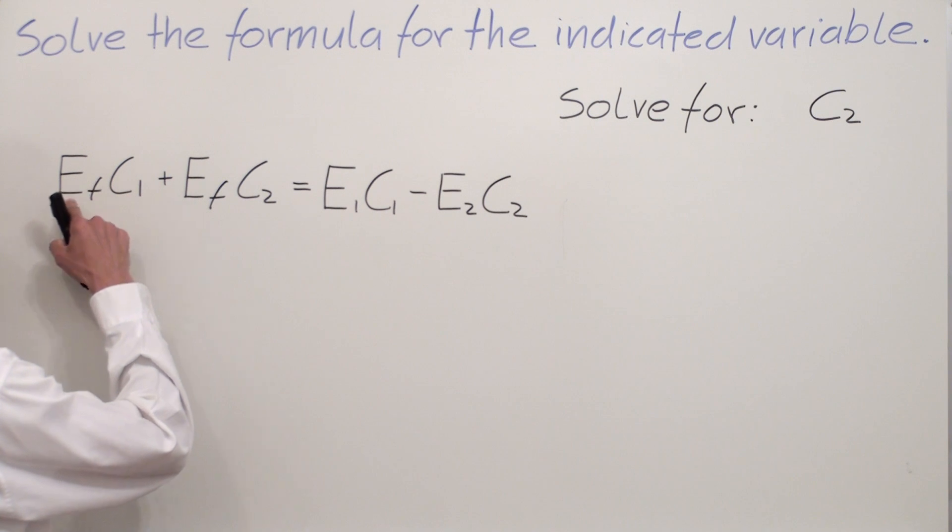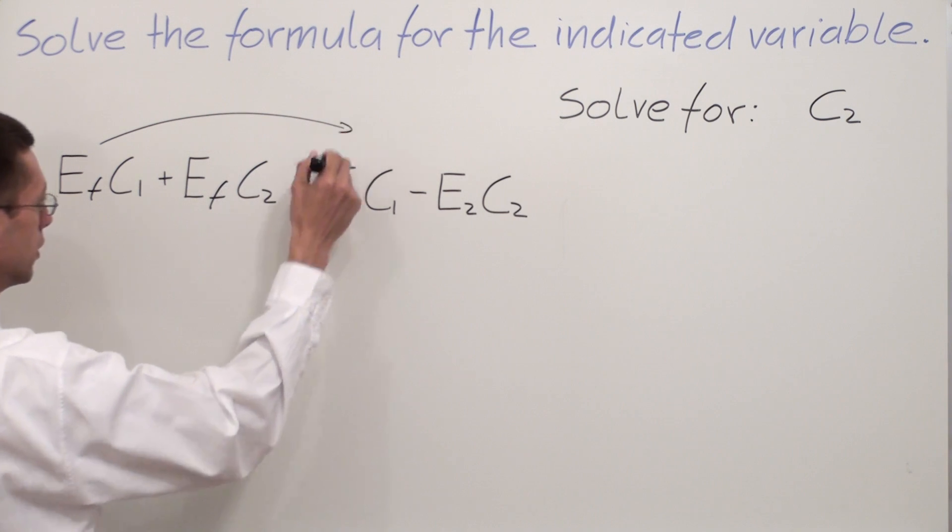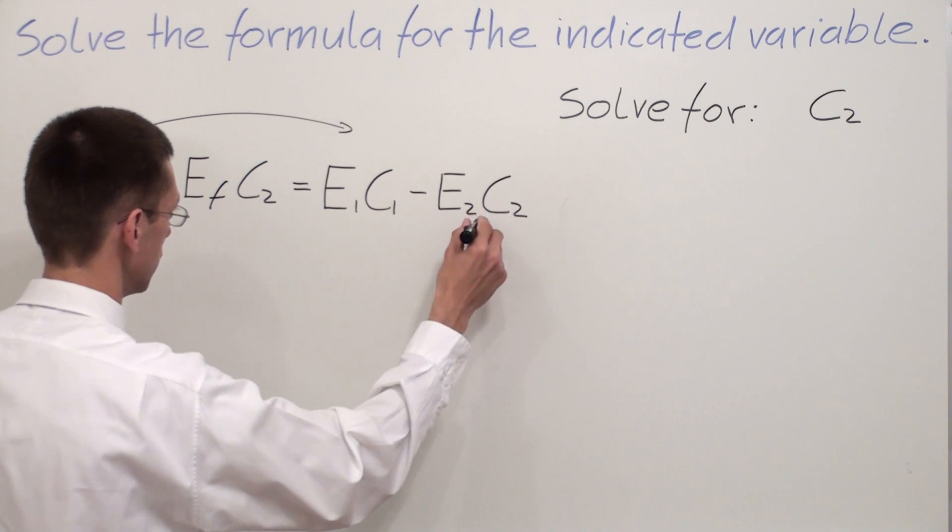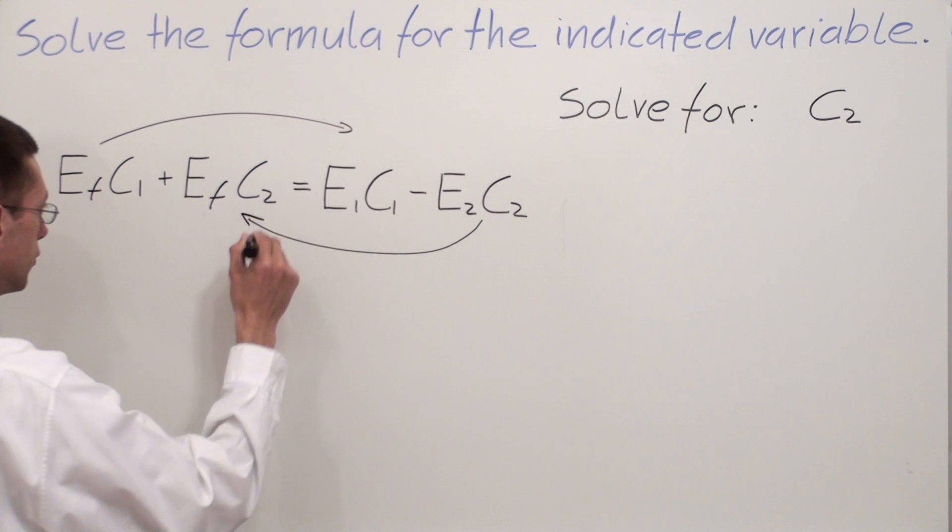Because EF C1 has no C2, I'm going to move it to the right side of the equation. And because I have E2 and C2, I'm going to move it to the left side of the equation.